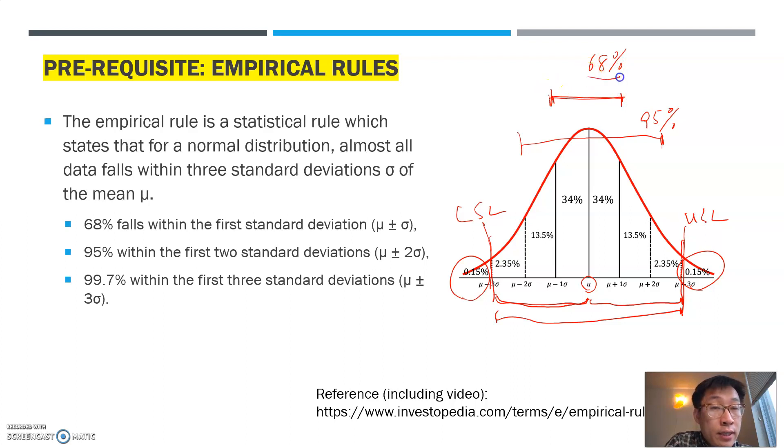So this is what empirical rules is all about. Keep this in mind and we'd like to keep our specification limit on or beyond the three standard deviation. Therefore, the defect rate can be as little as possible. So how do you capture that insight more systematically using process capability index? That is going to be something I'd like to discuss in upcoming sections.